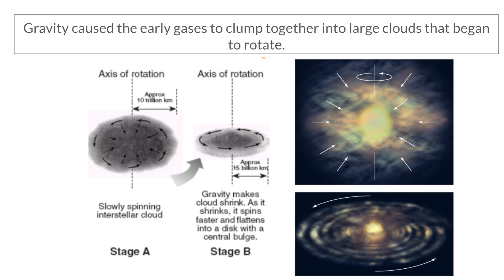Gravity caused these early gases of hydrogen and helium to come together into large clouds that began to rotate. This cloud of hydrogen and helium started to form, and since it has mass, gravity started pulling the center into itself. As everything started clumping together into these clouds, they began rotating. In space, once there is a force acting in a direction, that force doesn't really stop, because there's no opposing force like friction that we have on Earth. So if there's a force happening, it keeps going until something stops it.